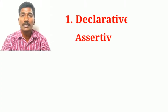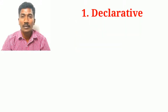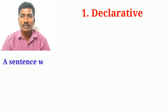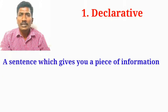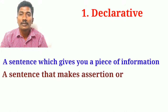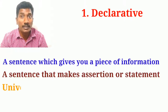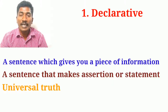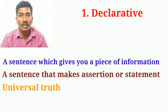The first one is declarative, or assertive, or statement as we call it. A sentence which gives a piece of information, makes an assertion or a statement, expresses a universal truth, or conveys a piece of information is called a declarative sentence. For example: